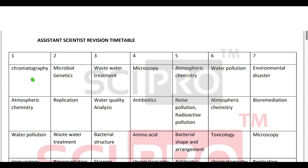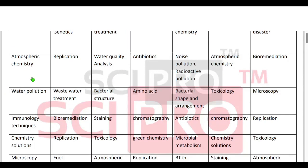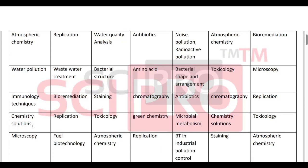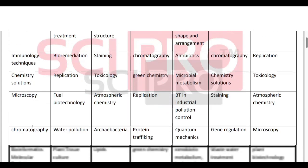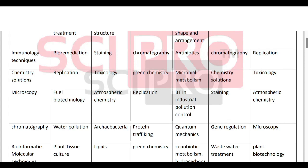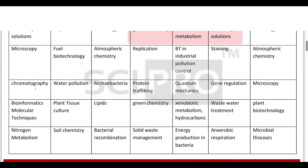Now, we will check in the chromatography. Today, chromatography and atmospheric chemistry is a very important area. Water pollution, immunology techniques, chemistry solutions, maximum problems. Microscopy, chromatography, bioinformatics, molecular techniques — these are the maximum topics.